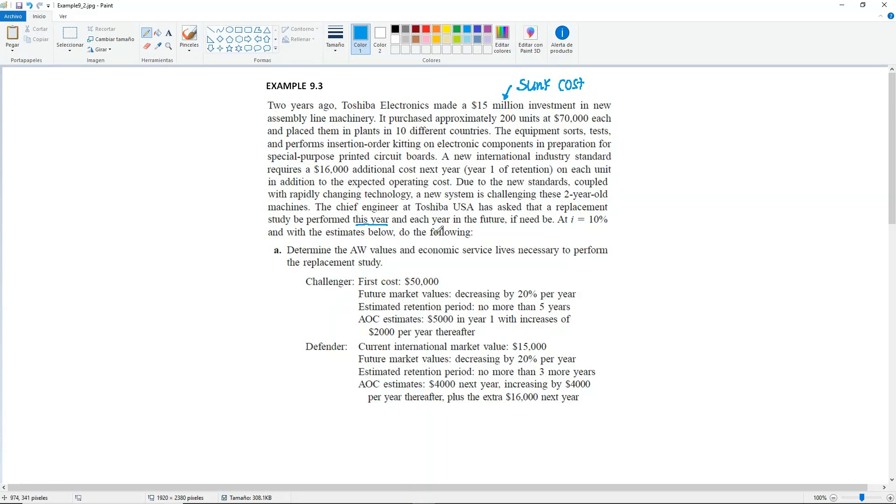So even though we have an amount here, this is a sunk cost or an irrelevant cost because we will be performing the study this year. So we do not need to know how much it costs in the past or two years ago in this case. Now let's look at, well, we have the interest rate given here, and then we have our values given for both the challenger and the defender. For the challenger, it says that it has a first cost of $50,000. So this will be our P. It has future market values decreasing by 20% per year.